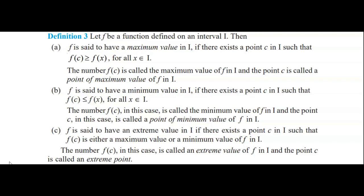f is said to have a minimum value in I if there exists a point c in I such that f(c) is less than or equal to f(x) for all x belonging to I. The number f(c) is called the minimum value of f in I, and the point c is called a point of minimum value of f in I.